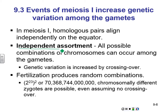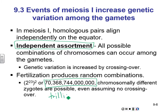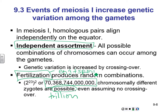They call this crossing over. We're going to talk about independent assortment in just a second, but I wanted you to look at this number — this is trillion. There are 70 trillion possibilities when we talk about fertilization, which is when we take an egg and a sperm and put them together. So, 70 trillion different genetic possibilities.